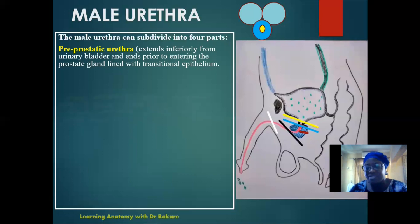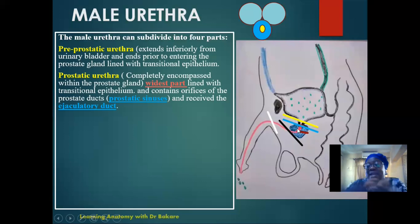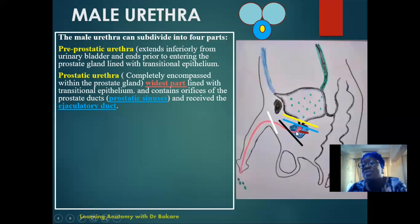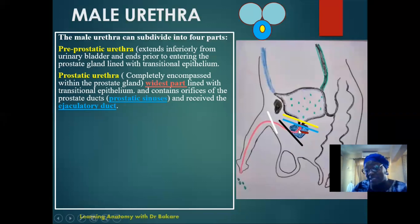The next region is the prostatic urethra — this is the region that runs through the prostate gland, and that is why it's called the prostatic urethra. This region is completely embedded within the prostate gland. It is the widest in terms of caliber, and it is also lined with transitional epithelium, continuous with the preprostatic urethra. Another feature of the prostatic urethra is that it has sinuses through which the secretions of the prostate gland are released into the urethra — it is through these prostatic sinuses that this release is done.